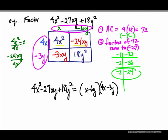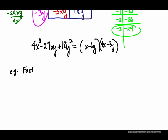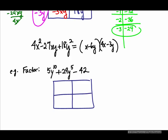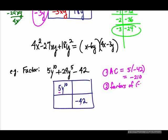Last example of this method is we are going to factor 5y¹⁰ + 29y⁵ - 42. First step, I'm going to put in for the tic-tac-toe. In here, I have 5y¹⁰ and -42. First step, this is a, this is c. So our first step, a times c, is 5 times -42, which is -210. We're now going to proceed to get the factors of -210.